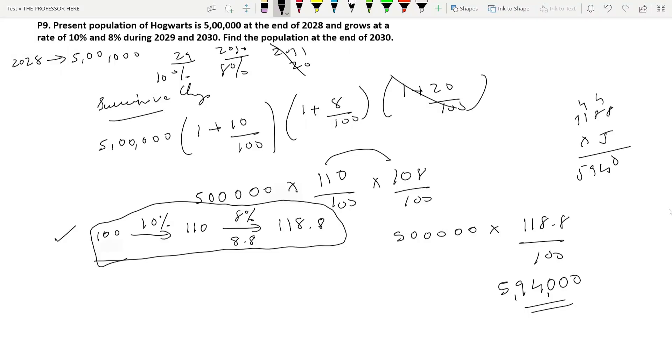We have solved question number P9 in the last video. There is one more thing to add here. Suppose in 2030 there was a decrease of 8 percentage, so what will happen? Instead of writing 1 plus 8 by 100, all you have to do is write 1 minus 8 by 100. I hope you understood this question.